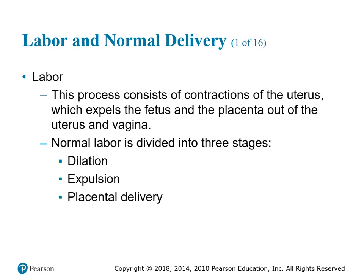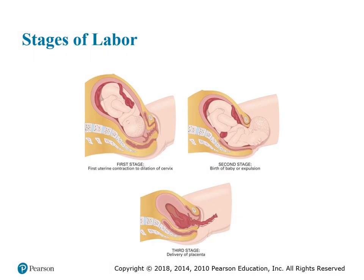Labor is a process consisting of contractions of the uterus which expel the fetus and placenta out of the uterus and vagina. Normal labor is divided into three stages: dilation, expulsion, and placental delivery. In the first stage, you have the first uterine contractions to dilation of the cervix and presentation. Second stage is birth and expulsion of the baby. Third stage is delivery of the placenta.